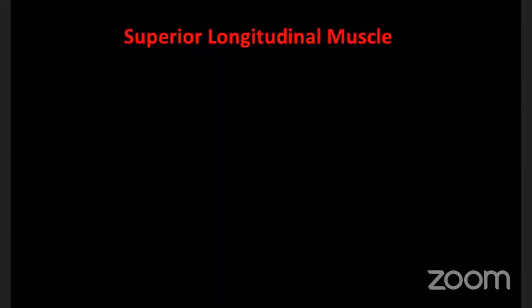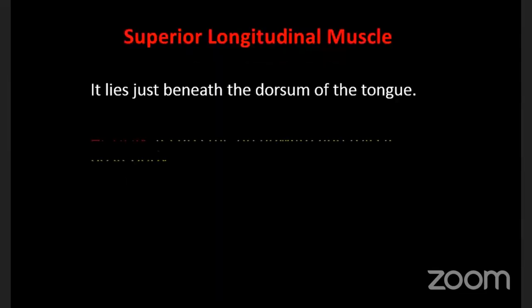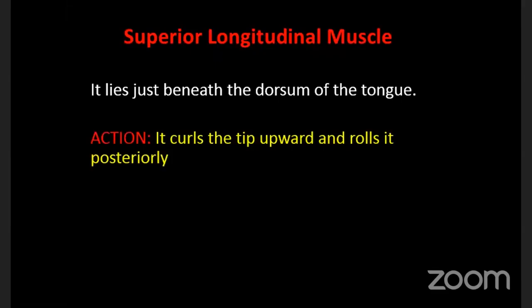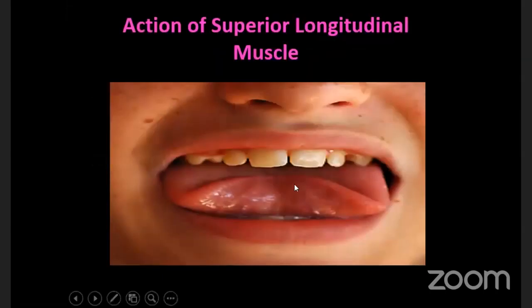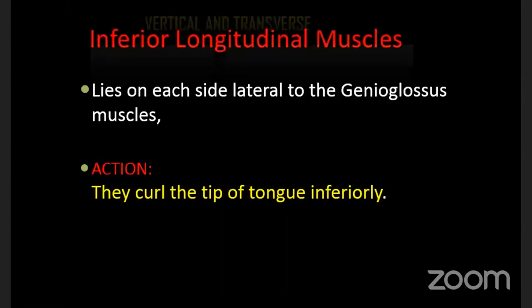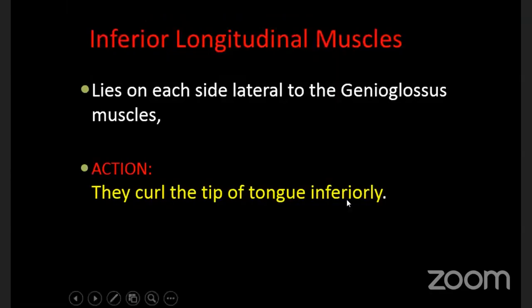The superior longitudinal muscle lies just beneath the dorsum of the tongue. When it contracts, it curls the tip of the tongue upward. When the inferior longitudinal muscle contracts, exactly the opposite action occurs - it curls the tip of the tongue inferiorly or downward.